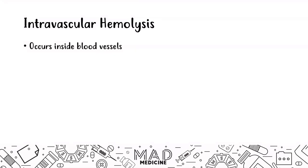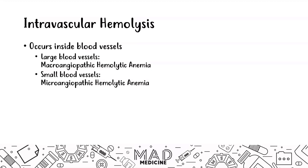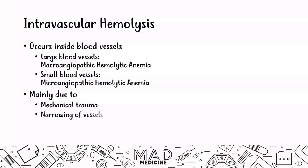Now, intravascular hemolysis occurs within the blood vessels. In the large blood vessels, we call this macroangiopathic hemolytic anemia, and in the small blood vessels, we call it microangiopathic hemolytic anemia. This can be due to mechanical trauma — such as a mechanical heart valve that lyses red blood cells — narrowing of the blood vessels, or small vessel thrombus that is lysing the red blood cells.